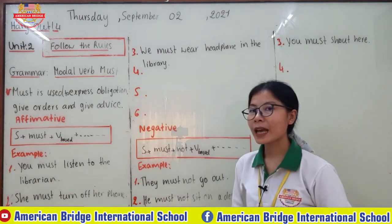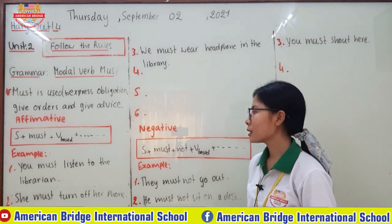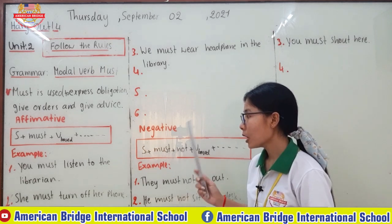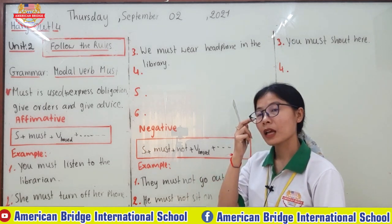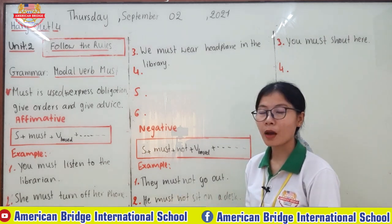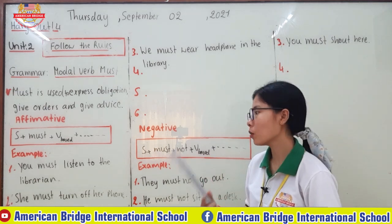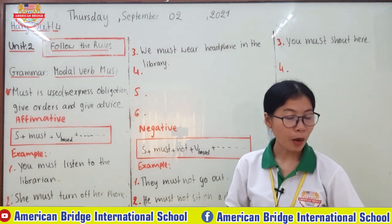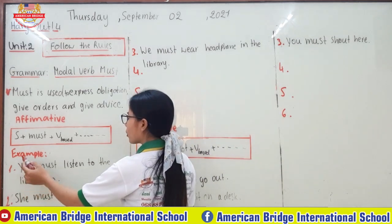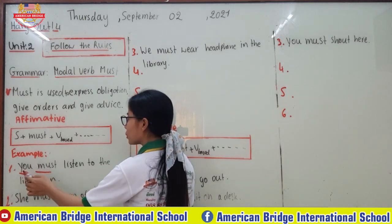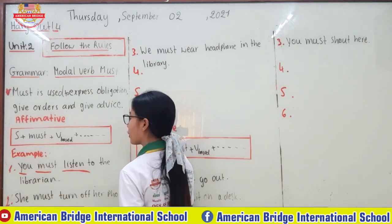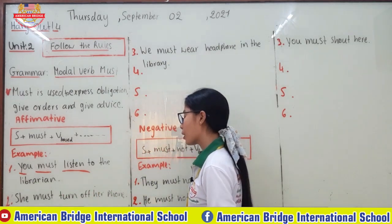For example: 'You must listen to the librarian.' Look at this sentence — it is about obligation, about what you have to do and must not do in the library system rules. You can also say it is advice. It follows our form: you (subject) + must (modal verb) + listen (verb base). Another example: 'She must turn off her phone.'